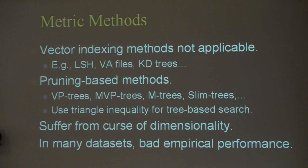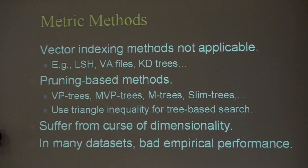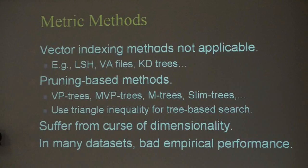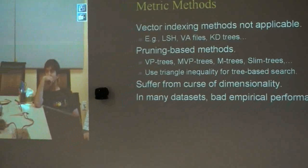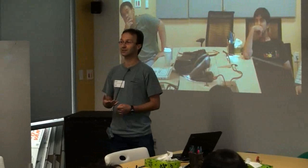This means a large fraction of indexing methods that have been proposed cannot be applied to these datasets. Most indexing methods in the database community deal with vector spaces — popular methods like locality sensitive hashing, PCA, KD trees, and VA files assume your data is vectors. There is also a family of metric methods like VP trees, M trees, and various other tree structures that use the triangle inequality to prune candidate matches. However, in practice, if your space is non-metric, these methods become inherently heuristic and usually break down pretty badly.